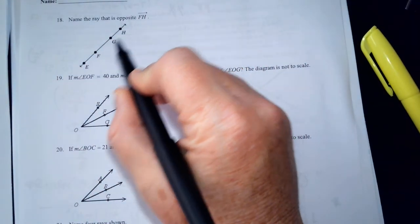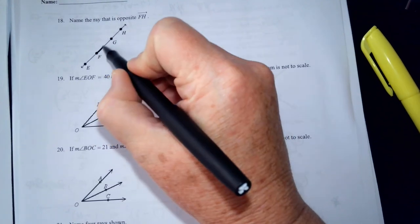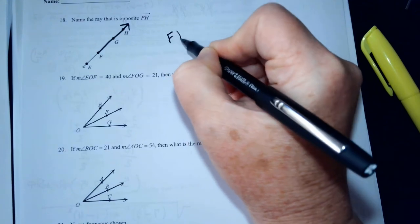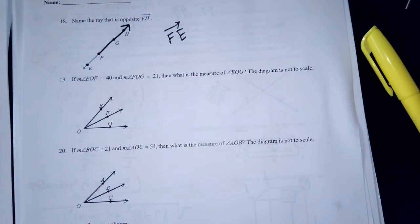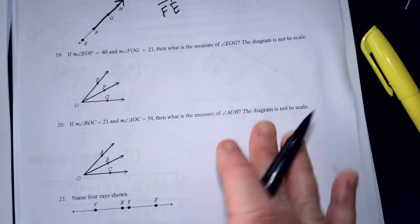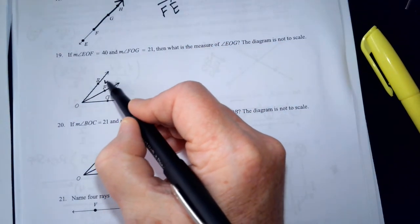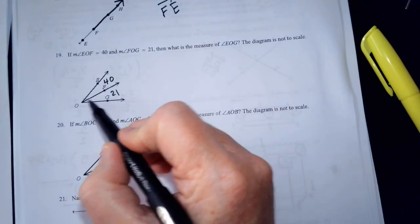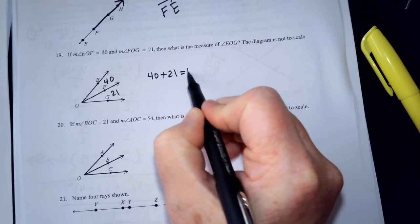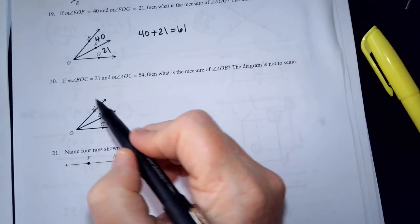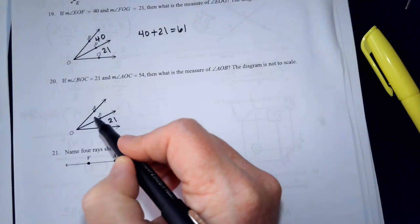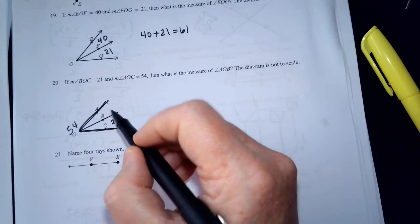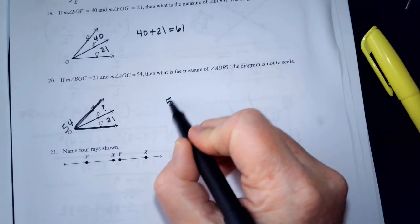Name the ray that's opposite F-H. F-H goes this direction. What goes the other direction? F-E. That's the only way you can answer that question. There's no other right answer. If EOF is 40 and FOG is 21, what's the measure of EOG? 61. Yes. Super easy. If BOC is 21 and AOC, that's the big one, y'all, is 54, what is the measure of AOB? Good. You subtract.